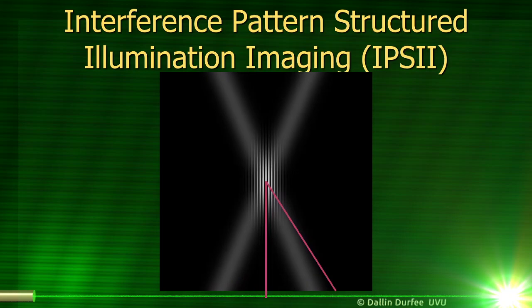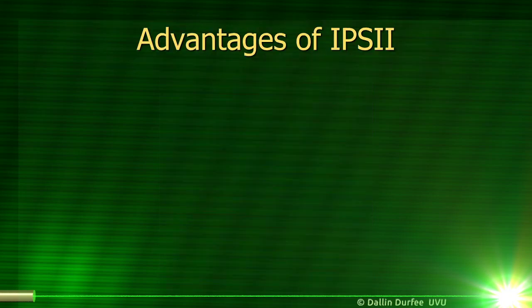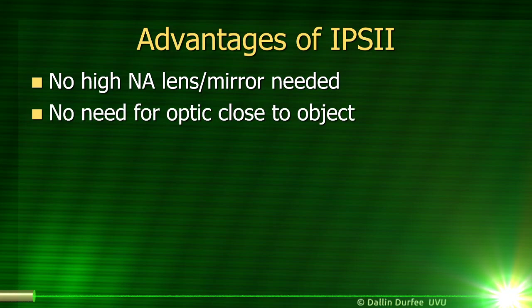If you take the maximum angle we scan our laser beam to, you could call that the effective numerical aperture of our IPSI imaging. For a given effective numerical aperture, we get twice the resolution of conventional imaging with the same numerical aperture. We don't need a high numerical aperture lens or mirror, which cuts cost and makes it possible to do IPSI imaging with wave types that are difficult for conventional optics, like x-ray or acoustical imaging. There is no need for optics close to the object — the numerical aperture of our system is set by the maximum angle we sweep our laser beams to, and they could be traveling from a long distance away, enabling high-resolution imaging without getting anything close to what you're imaging.